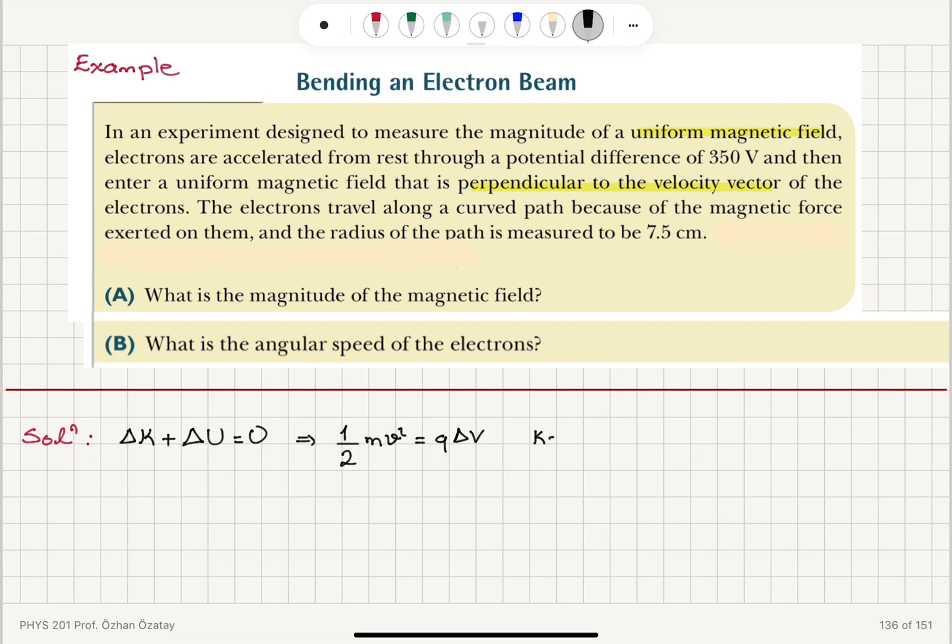So, we have k final minus k initial is equal to u initial minus u final. Now, k initial is 0 and we have u final is 0. So, we have basically 1 half mv squared. The final kinetic energy equals to the initial potential energy q times delta v.